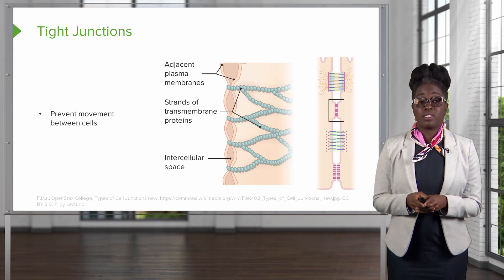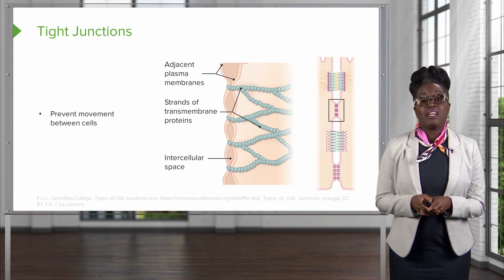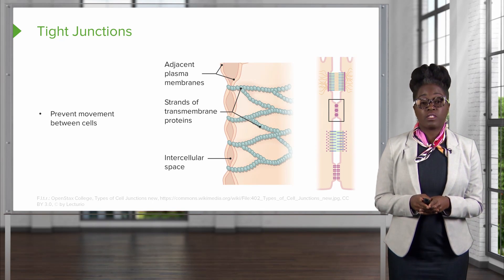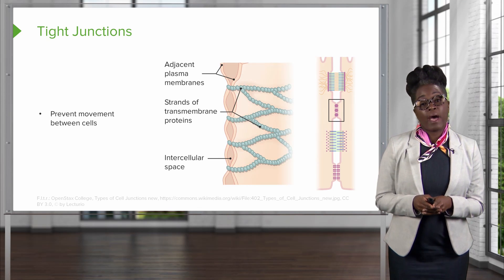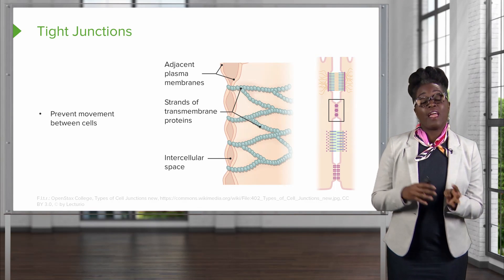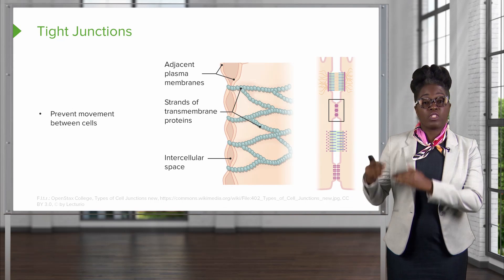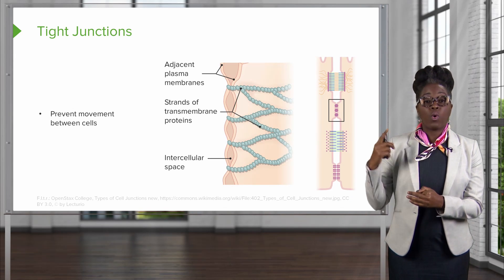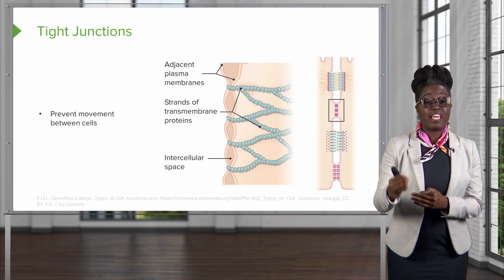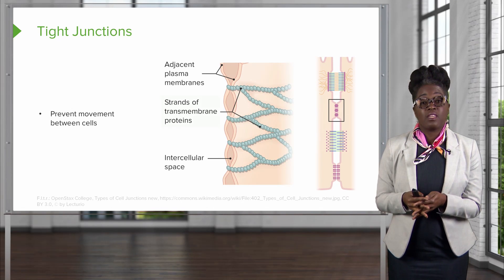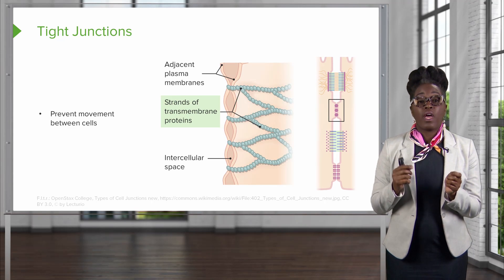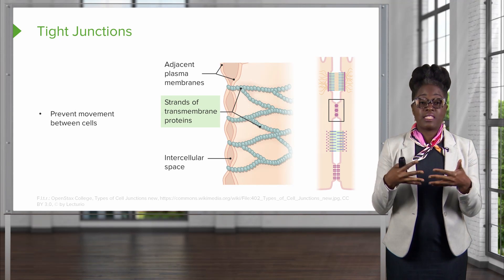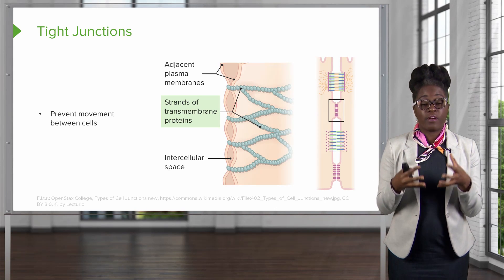The first type of junction we'll discuss is the tight junction. The tight junction is a type of junction between two cells that prevents movement of substances between those two cells. Think about an apartment where you have your apartment and the apartment next door, and there's a wall in between, and no one or nothing should be getting in between those two apartments. This works via transmembrane proteins between the two cells that link and hold them together tightly.